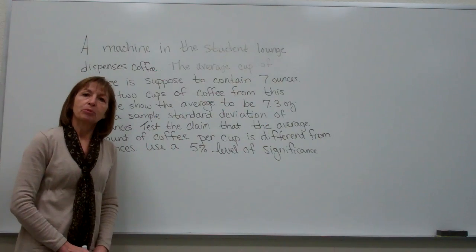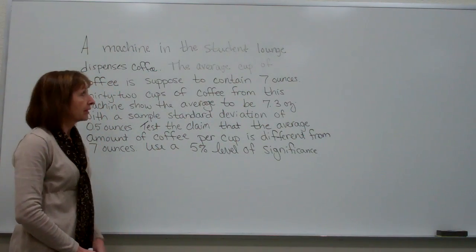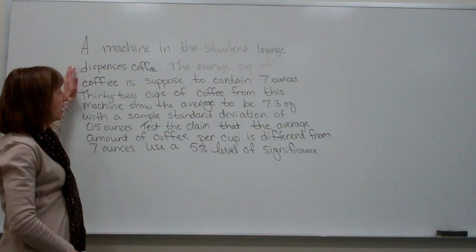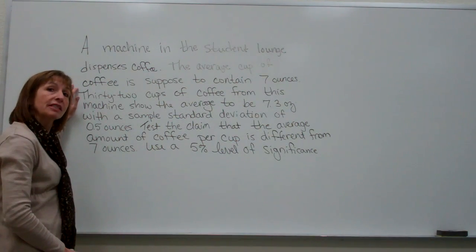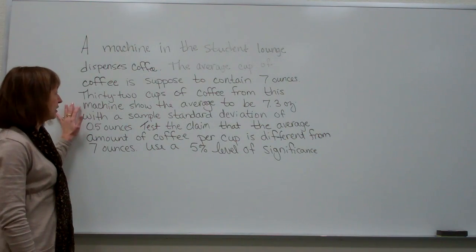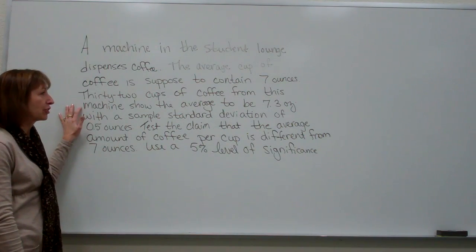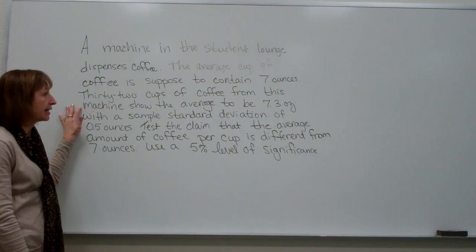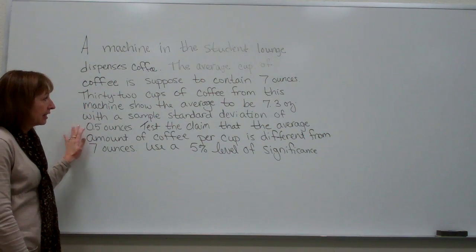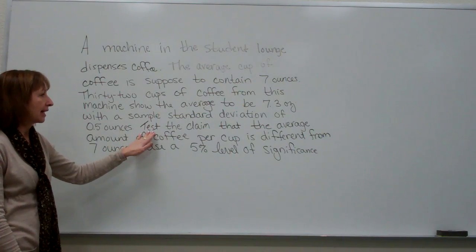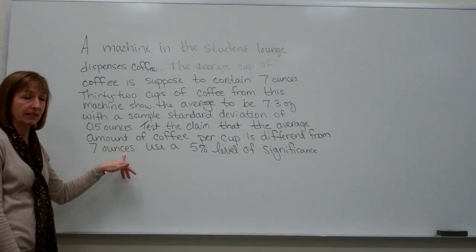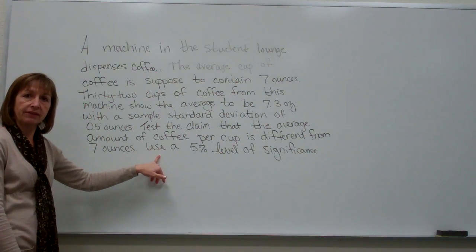Let's look at another example of hypothesis testing. Here I have a machine in a student lodge that dispenses coffee. The average cup of coffee is supposed to contain 7 ounces. There are 32 cups of coffee from this machine and it shows that the average is 7.3 ounces for that sample, with a sample standard deviation of 0.5 ounces. The question says to test the claim that the average amount of coffee per cup is different from 7 ounces, using a 5% level of significance.